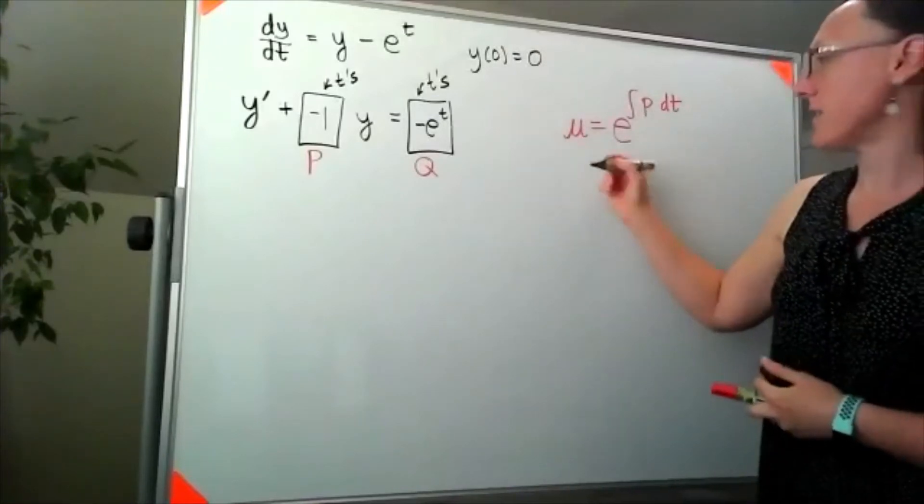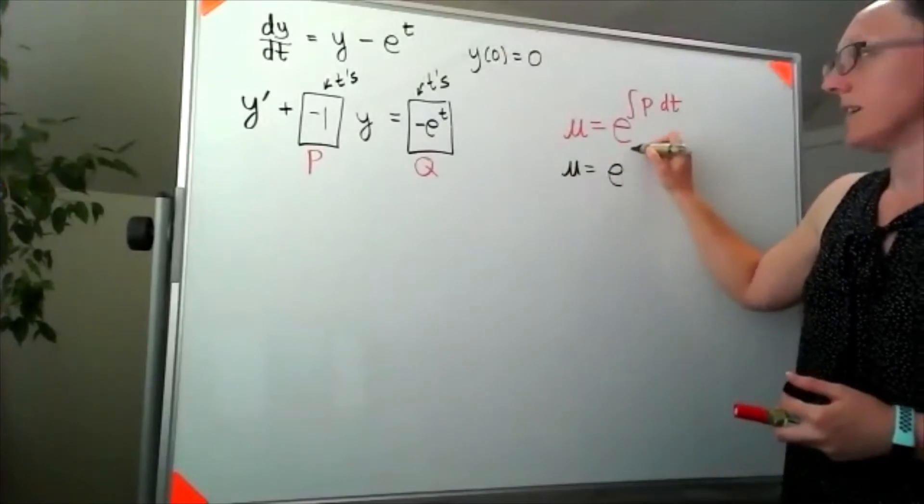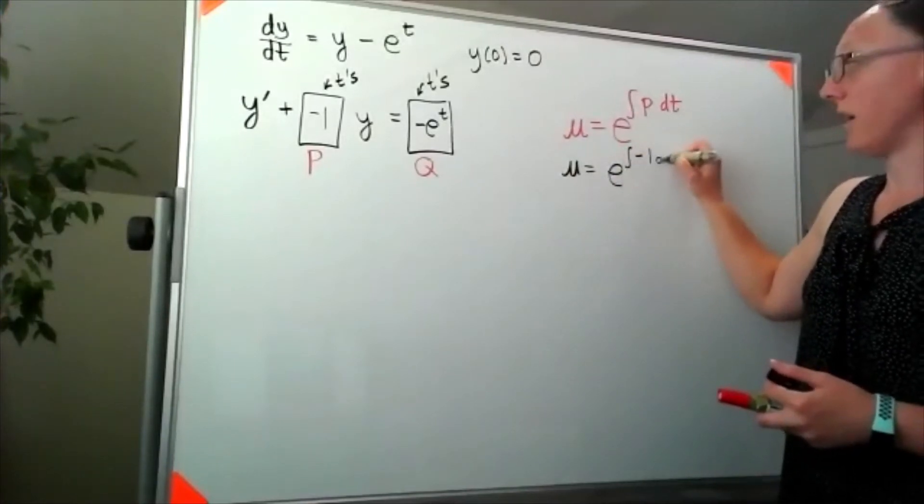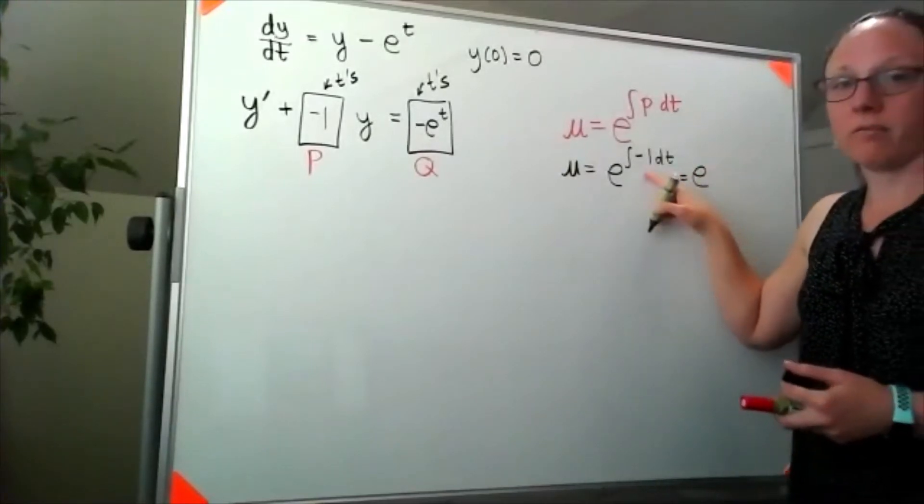So for us, that integrating factor would be e to the integral of negative 1 dt, or e—when I integrate negative 1, I'll get negative t.